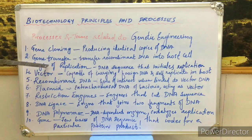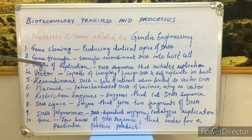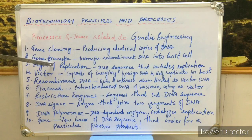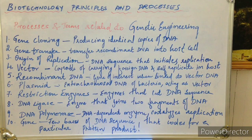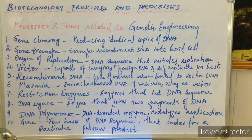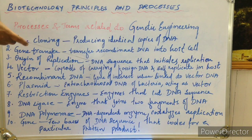Next is origin of replication. In the human body, DNA must get replicated. During the cell cycle, in the S phase of interphase, DNA replication takes place and the amount of DNA is doubled. When replication occurs, an enzyme known as DNA polymerase detects a specific DNA sequence that initiates replication, and that particular DNA sequence is known as the origin of replication.